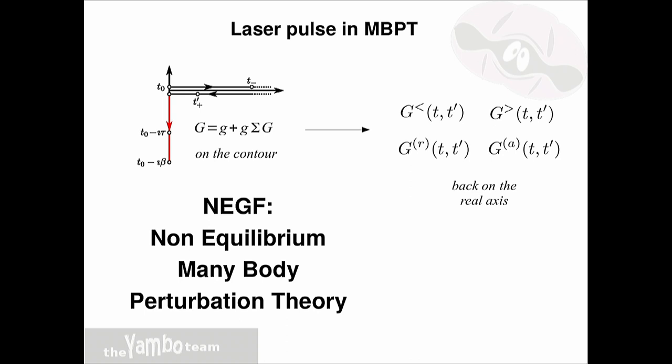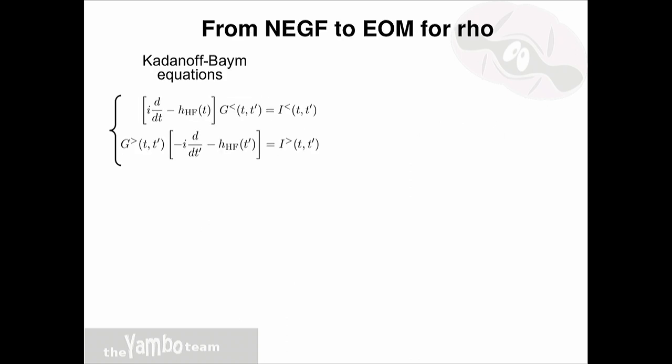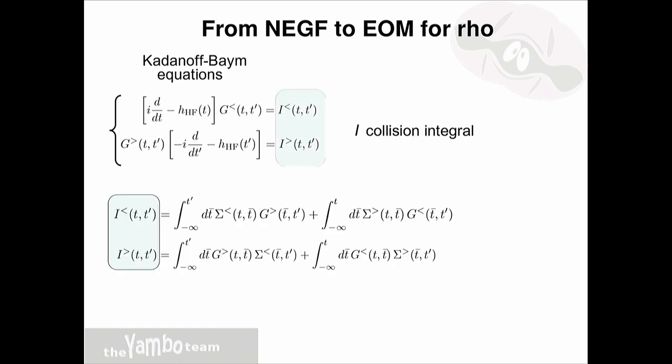This Dyson equation will become basically a differential equation for the time propagation of the lesser and greater Green functions. There is a first piece called the Hartree-Fock Hamiltonian, and a second piece called the collision integral. Any static approximation of the self-energy enters the Hartree-Fock part, and any dynamical approximation enters the collision integral. The collision integral is a complex object containing an integral over time of the self-energy times the Green functions; for a static self-energy, this integral goes to zero.